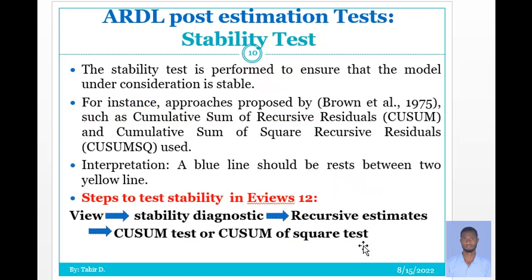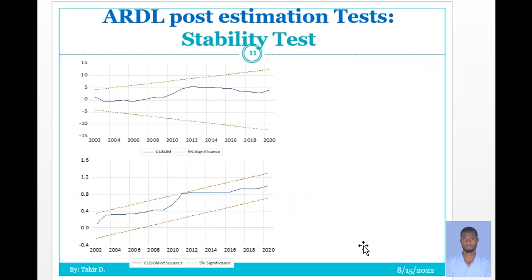The stability test is performed to ensure that the model is stable. The approaches proposed include the Cumulative Sum of Recursive Residuals (CUSUM) and Cumulative Sum of Squares of Recursive Residuals (CUSUMSQ). The interpretation: the blue line should lie between the two yellow lines. The steps in EViews: View, then Stability Diagnostics, then Recursive Estimates, then select the CUSUM test or CUSUM of Squares test. If the blue line lies between the two yellow lines, the model is stable.